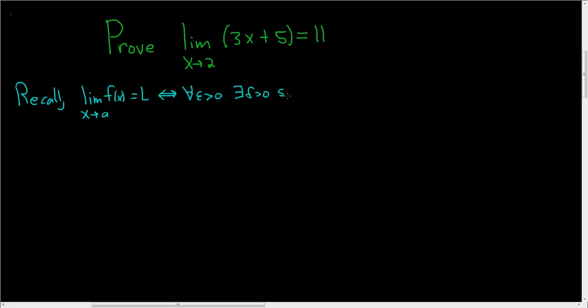such that for all real numbers x, with the distance between x and a smaller than delta, we have the distance between f of x and l smaller than epsilon. So we're going to use this definition to prove that the limit is 11.